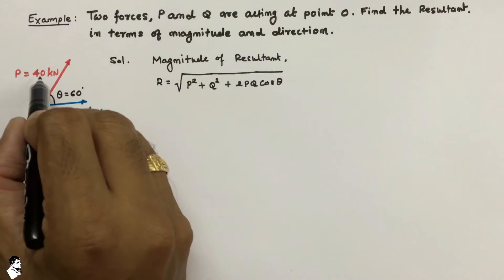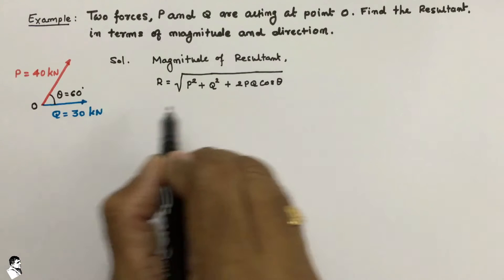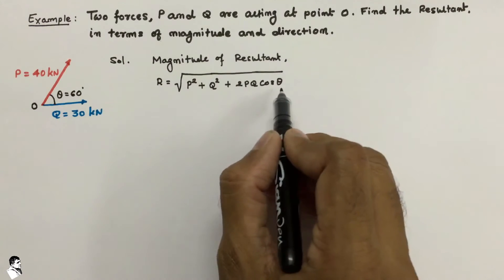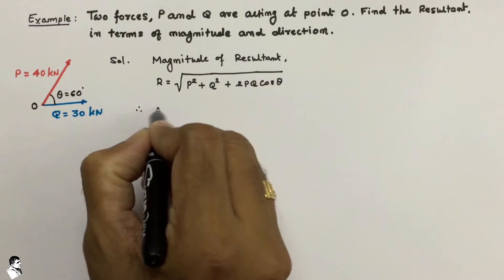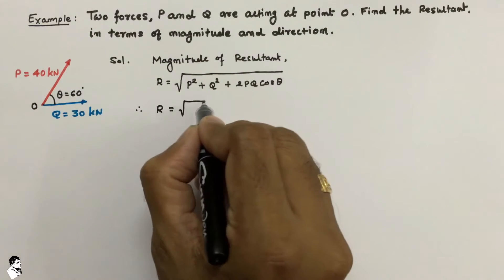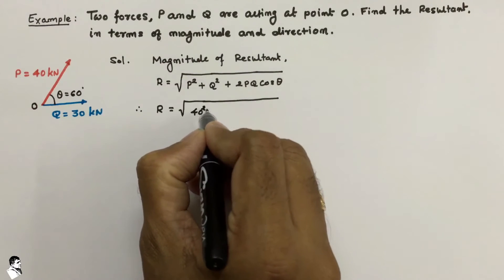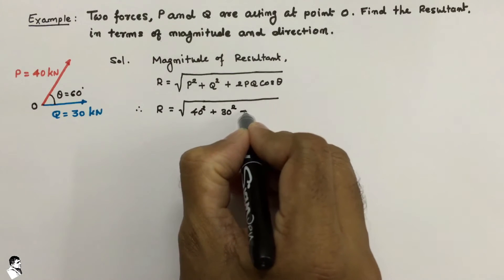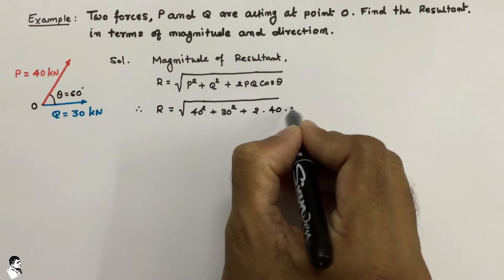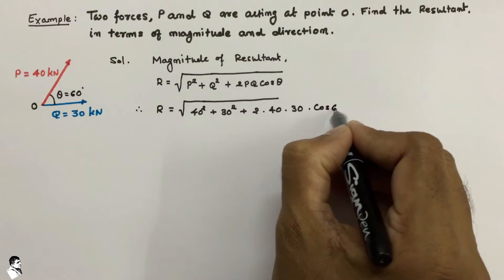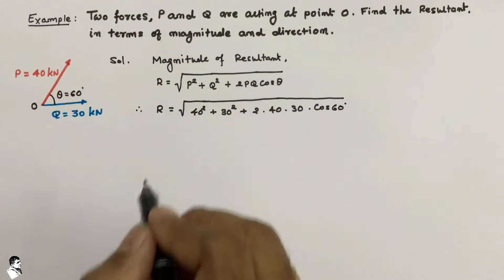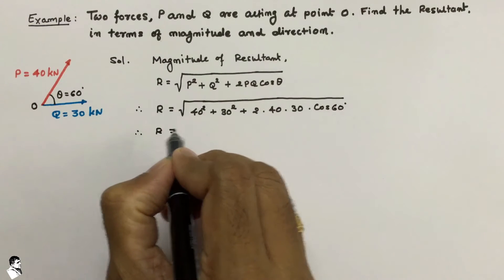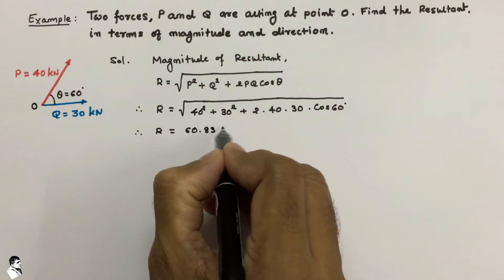Here force P is 40 kN and force Q is 30 kN, acting with an angle of 60 degrees, so theta is equal to 60. Putting these values into the equation, R is equal to the square root of 40 squared plus 30 squared plus 2 into 40 into 30 into cos 60. Solving this equation, the magnitude of the resultant is R equal to 60.83 kN.